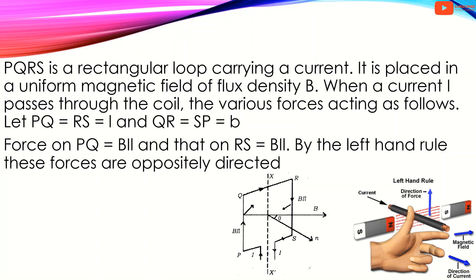Using Fleming's left-hand rule, the middle finger, four fingers, and thumb are mutually perpendicular. The four fingers represent the direction of the magnetic field, and the middle finger represents the direction of the current.